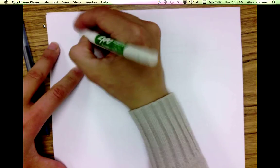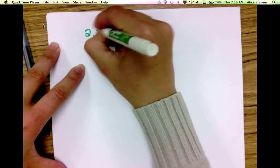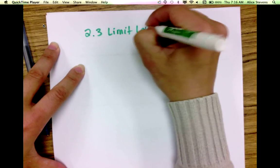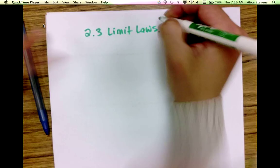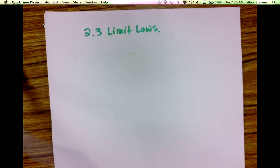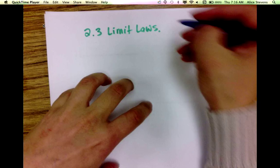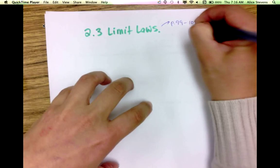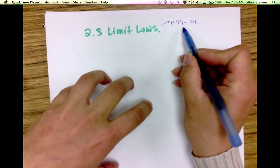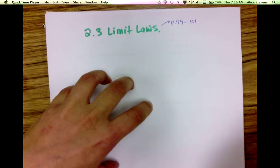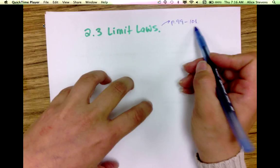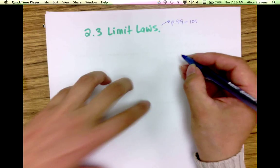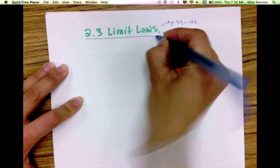Section 2.3 is about the limit laws. The limit laws can be found on pages 99 to 101. These laws allow us to compute lots of limits by using direct substitution. So I'm just going to do some examples.